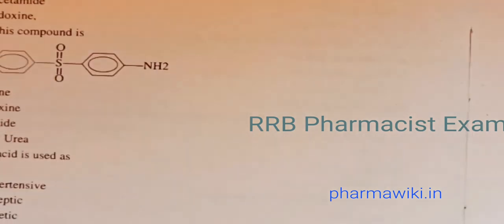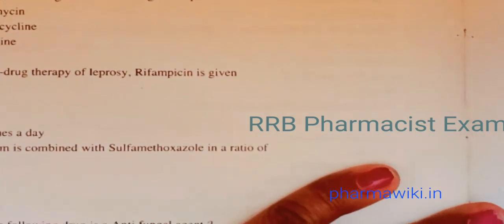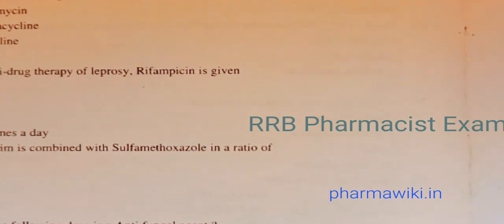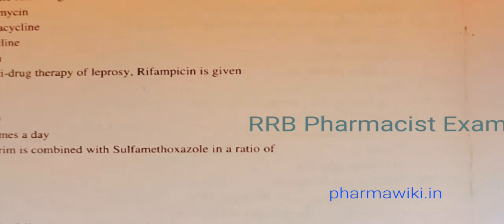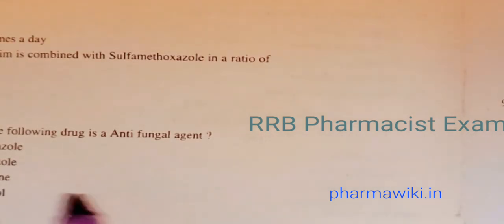Question 77: Valproic acid is used as — anti-TB, antihypertensive, anti-epileptic, or antidiuretic? The answer is anti-epileptic. Question 78: Which antibiotic has a high therapeutic index? The answer is erythromycin. Question 79: In multidrug therapy of leprosy, rifampicin is given monthly. Question 80: Trimethoprim is combined with sulfamethoxazole in a ratio of 1:5.